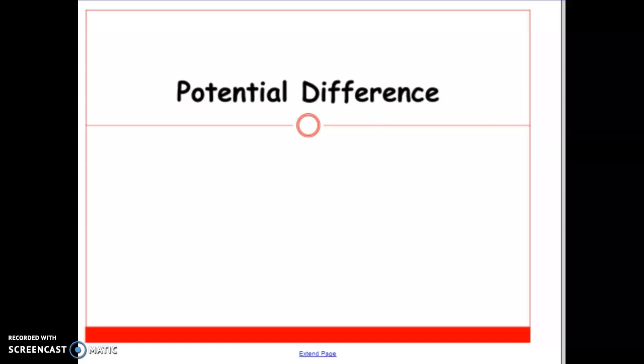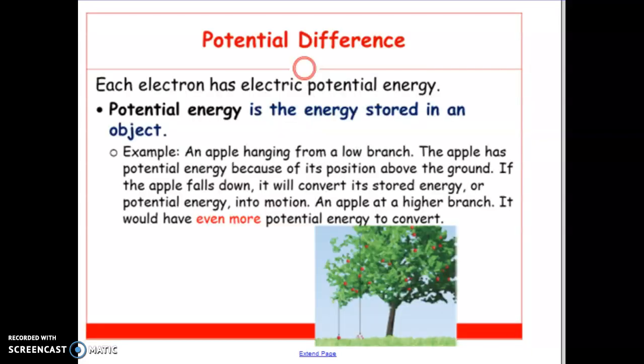We are going to go a little bit further into detail looking at circuits. The goal for this lesson is to look at two different terms: one being potential difference and another being current. You may have heard of these terms before. We're going to discuss basically what they are, what they represent, and what they mean when we're looking at circuits.